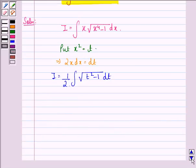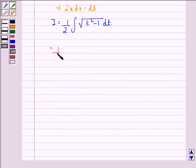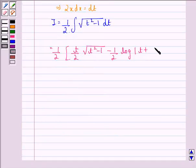So we simply put in the formula here and we get 1 by 2 into t by 2 into square root t square minus 1 minus 1 by 2 into log of mod t plus square root t square minus 1 plus the constant C.